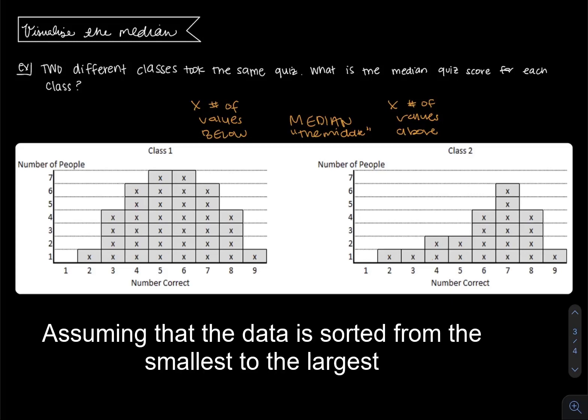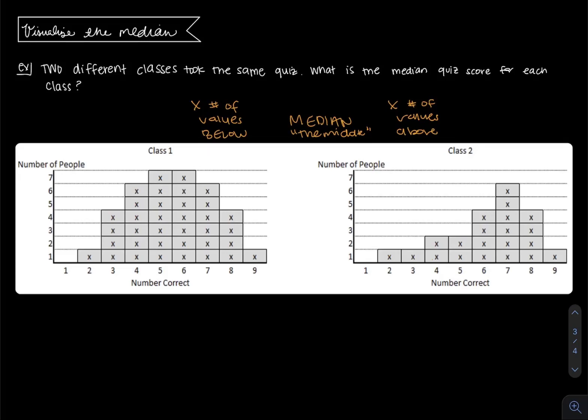In a perfectly symmetric number of values, it would be straight down the middle. If there's a skew to your data, then it is going to be somewhat shifted. If you have an even number of values, the median is perfectly in the middle between two data points, and if you have an odd number, it actually is a data value or very close to a data value. Median doesn't have to be one of the numbers that you have in your set, but it could be.